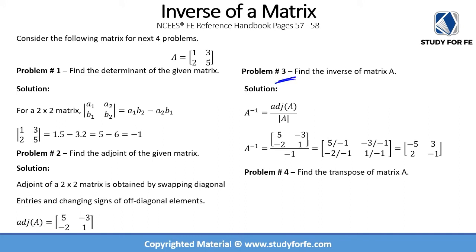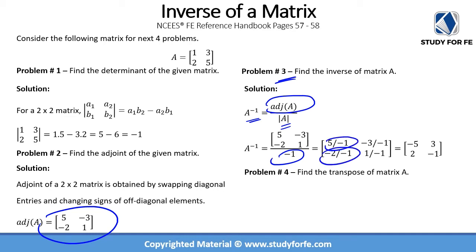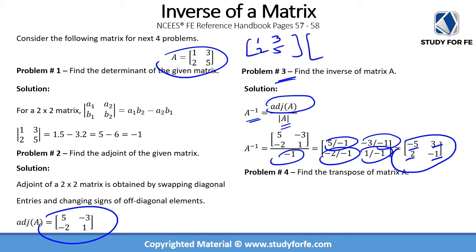Problem number three asks us to determine the inverse of the matrix. The inverse equals the adjoint divided by the determinant. So we take the adjoint we calculated and divide by minus one, giving us: five over minus one, minus two over minus one, minus three over minus one, and one over minus one — resulting in minus five, two, three, and minus one. I recommend multiplying matrix A by A inverse to verify you get the two by two identity matrix.